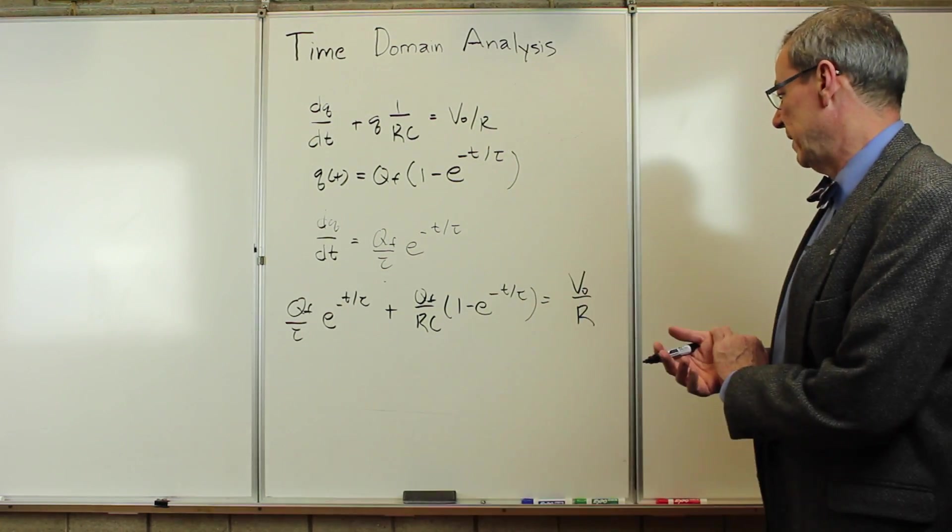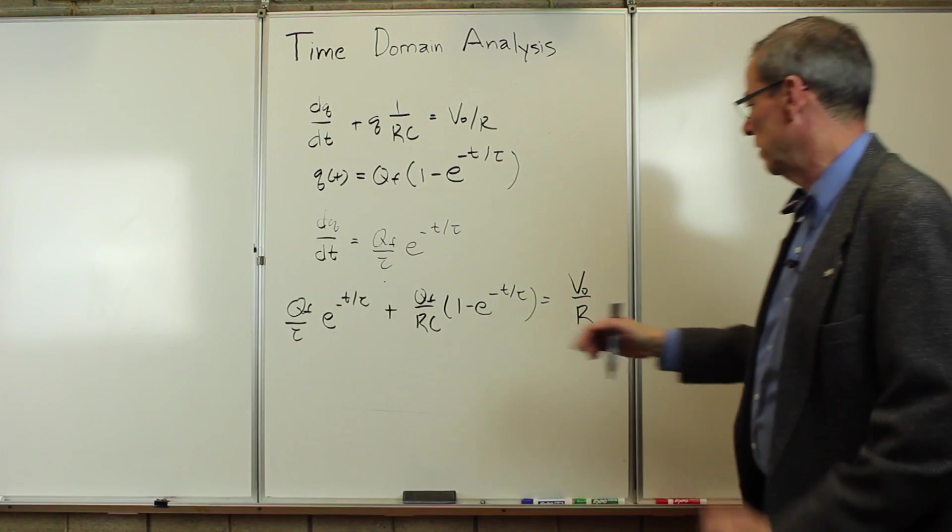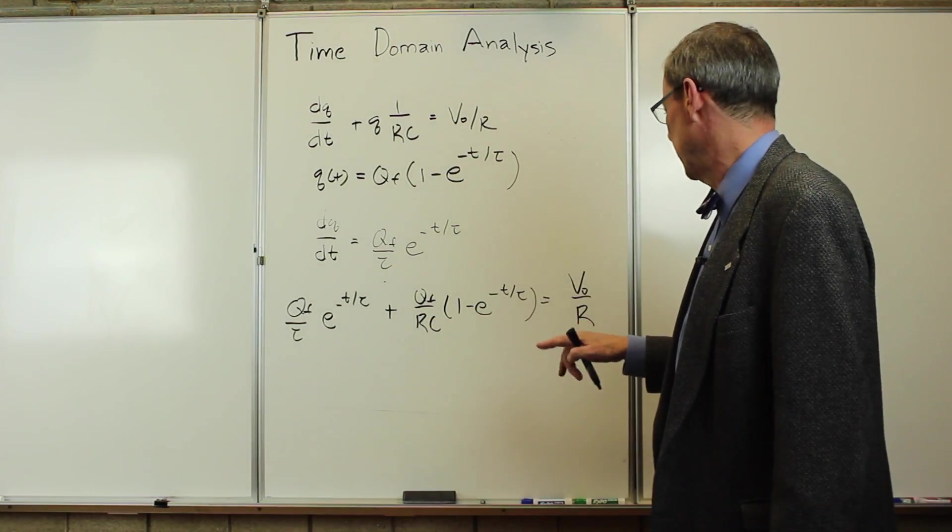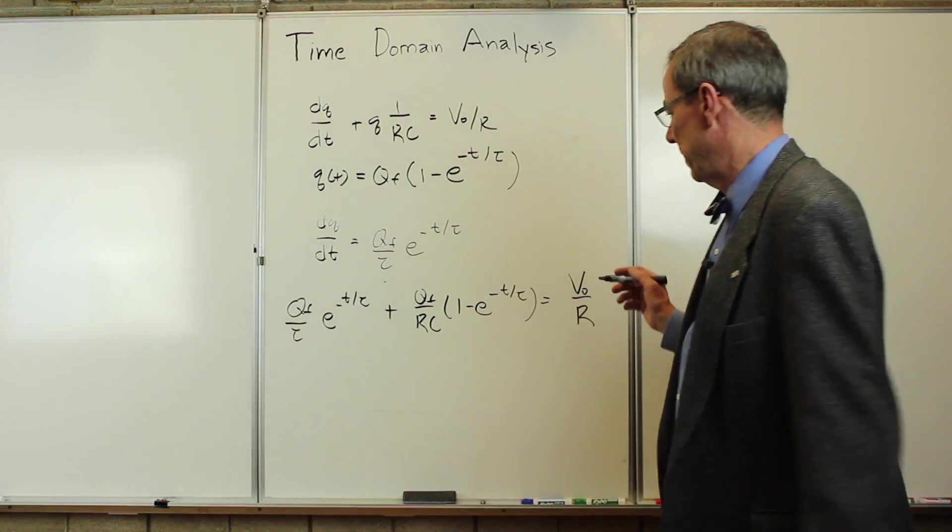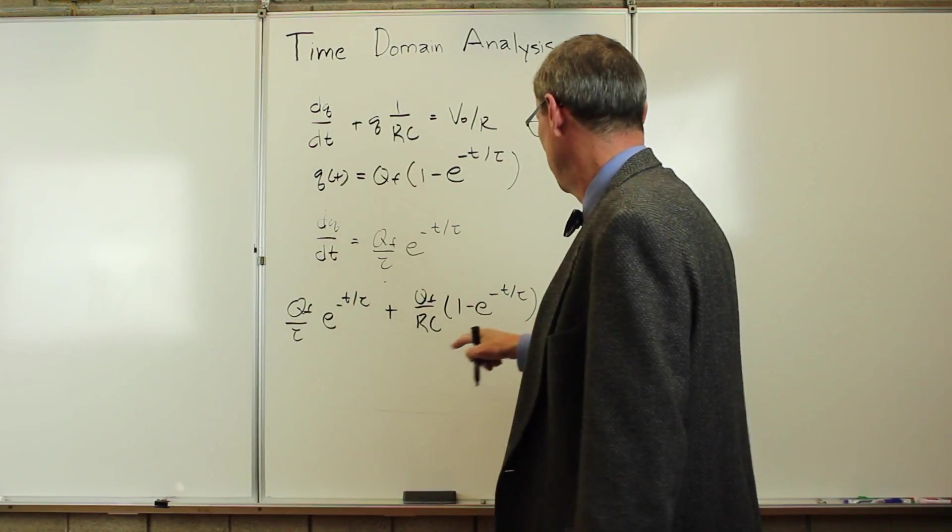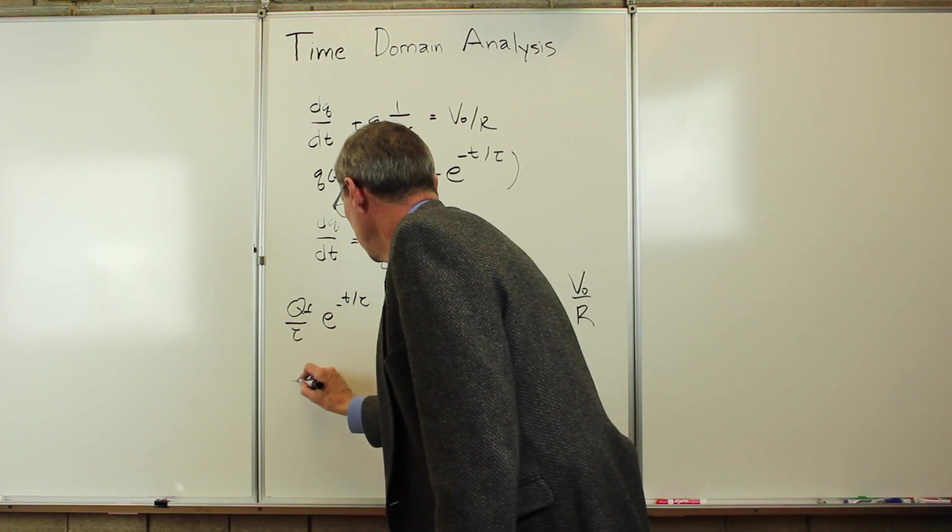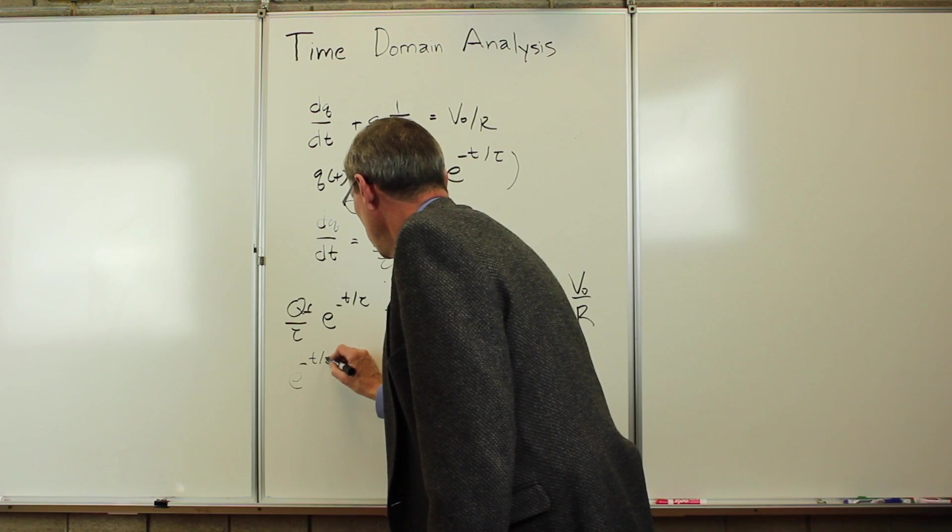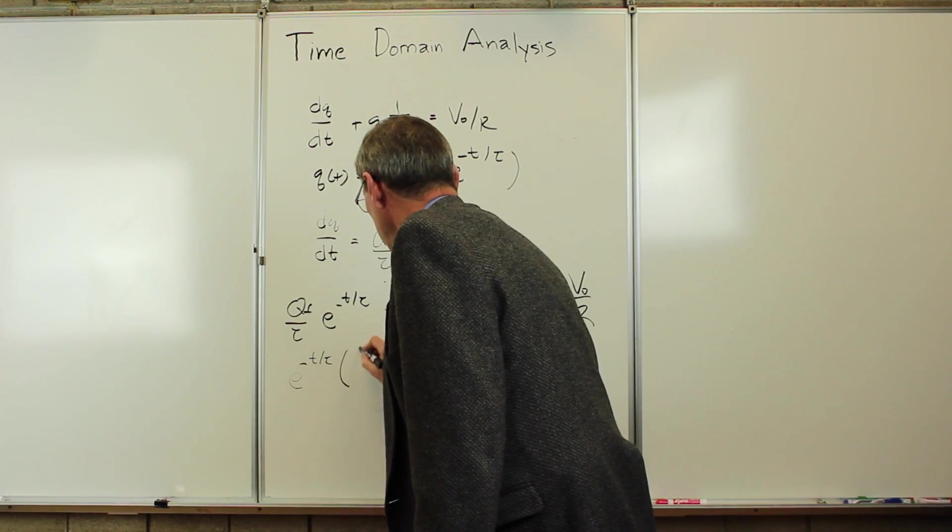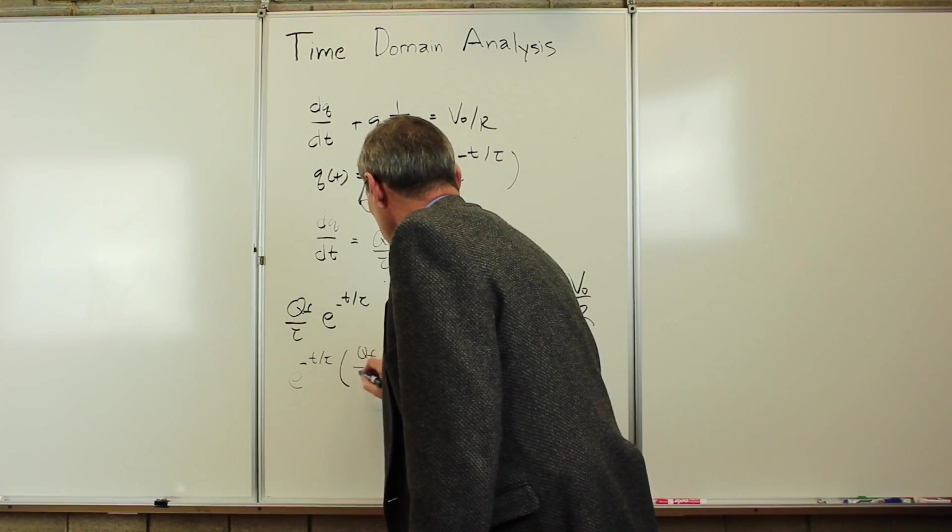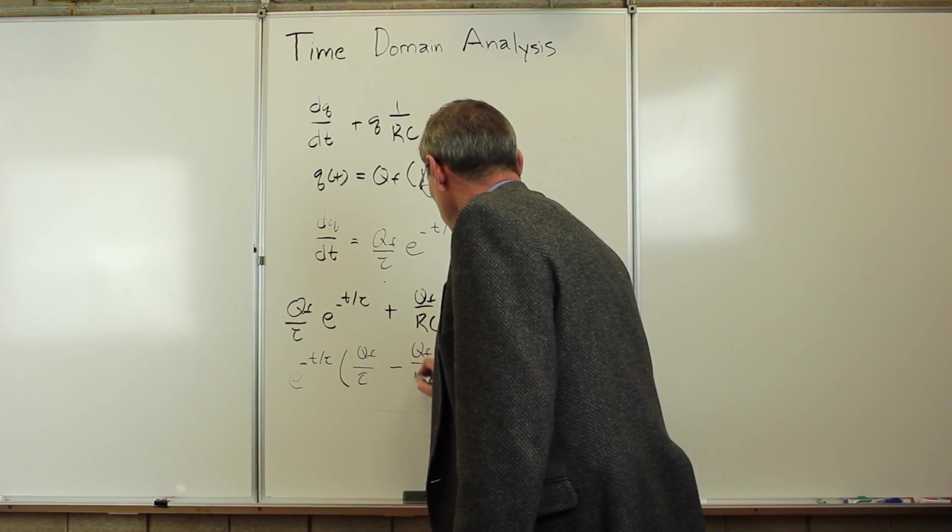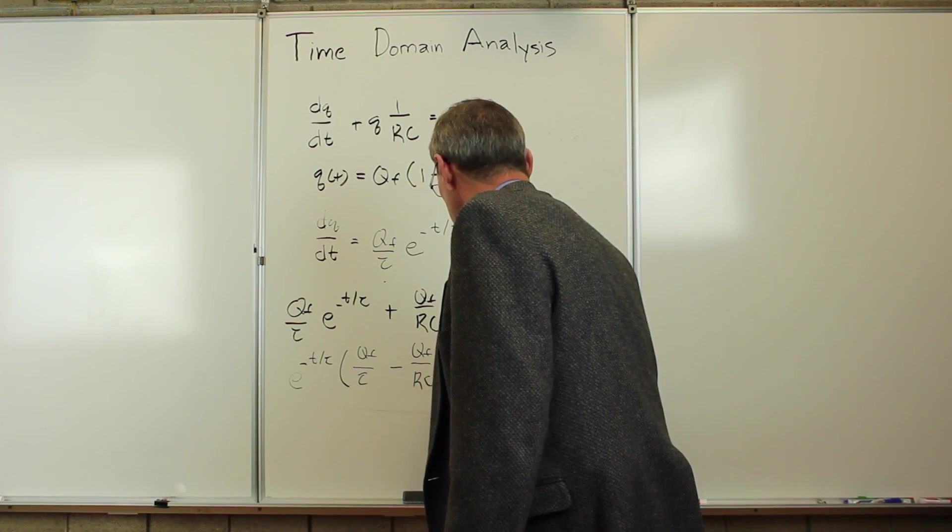Let me do one more thing here. Let me collect the terms that depend on time, put them together, and the terms that don't depend on time and put them together. So I'm going to get e to the minus t over tau times Q_final over tau minus Q_final over RC.